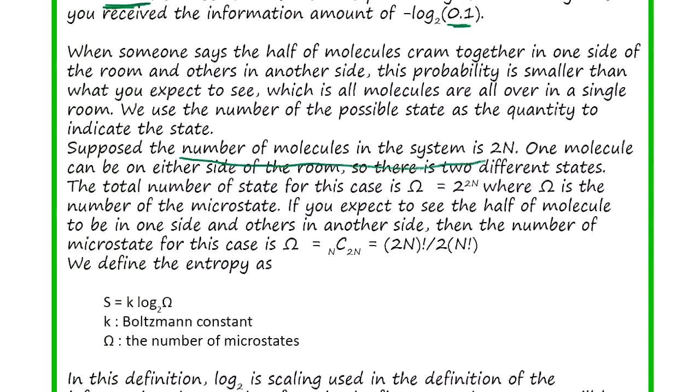Suppose the number of molecules in the system is 2N. One molecule can be on either side of room, so this is combinatorial math. You go through the calculation. Gibbs proposed that entropy is the combination of the molecule's state - where the molecule is.